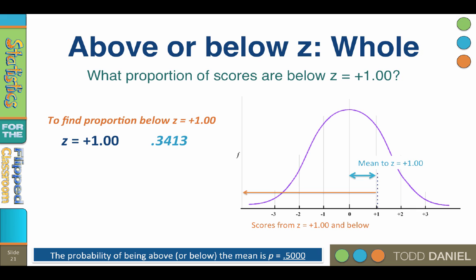Second, this section of the bell curve includes all of the scores below the mean. We know that this proportion is 0.5, or half of the scores. By adding these two portions together, we can determine the whole. Adding 0.3413 to 0.5 equals 0.8413.